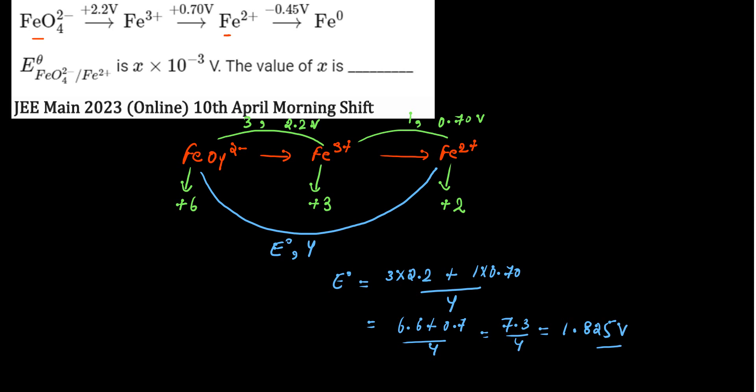So E⁰ of FeO₄²⁻ to Fe²⁺ will be 1.825 volts. Now the value should be stated as x × 10⁻³ volts.